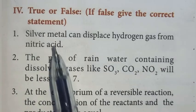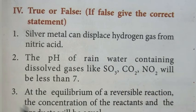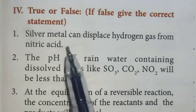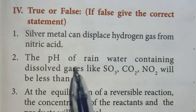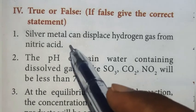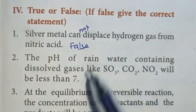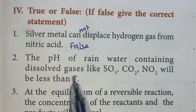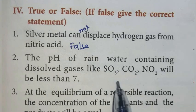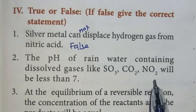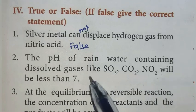Next part, true or false. If false, give the correct statement. First statement: Silver metal can displace hydrogen gas from nitric acid. False, because it cannot displace. Second: The pH of rainwater containing dissolved gases like SO3, CO2, NO2 will be less than 7. True.